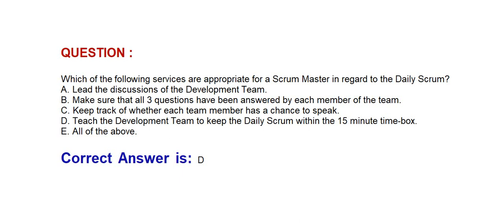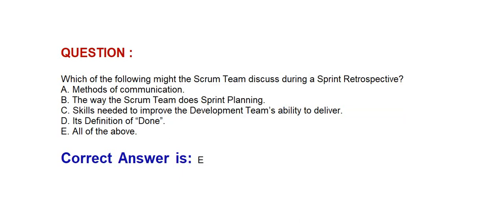Teach the development team to keep the daily scrum within the 15-minute time box. Next question: Which of the following might the scrum team discuss during a sprint retrospective? Option A: Methods of communication. Option B: The way the scrum team does sprint planning. Option C: Skills needed to improve the development team's ability to deliver. Option D: Its definition of done. Option E: All of the above. Correct answer is Option E: All of the above.